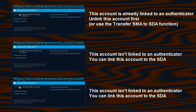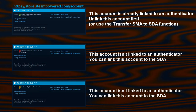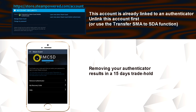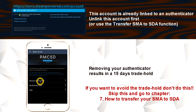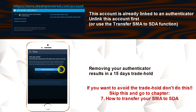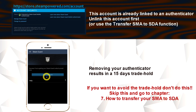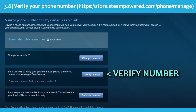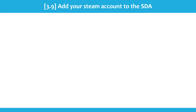Before we continue, your mobile authenticator must be unlinked — you can check this in your account settings. If you have a green shield, your mobile authenticator is already linked and you need to unlink it first, which will result in a 15-day trade hold. If you want to avoid the 15-day trade hold, switch to the chapter on how to transfer your SMA to SDA. You also have to check your phone number — I really recommend verifying your phone number before adding your Steam account to the SDA to prevent trouble. Now let's go back to the SDA.